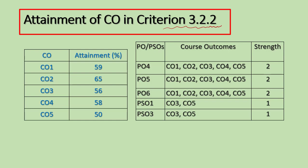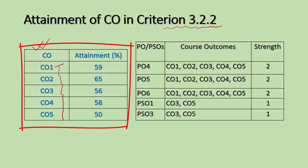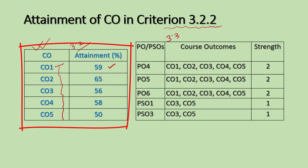For our subject or course — the one for which we have found the mapping strength — the attainment percentages are as follows: CO1 attainment is 59%, CO2 attainment is 65%, CO3 attainment is 56%, and so on. These values come from Criterion 3.2, while the mapping strength values come from Criterion 3.3.